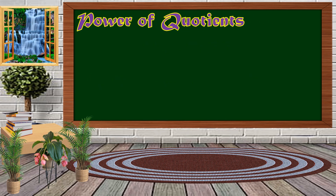Next, we have Power of Quotients. We have the quantity 'a over b' raised to n, and we distribute the exponent to get 'a raised to n over b raised to n', where b should not be equal to 0.